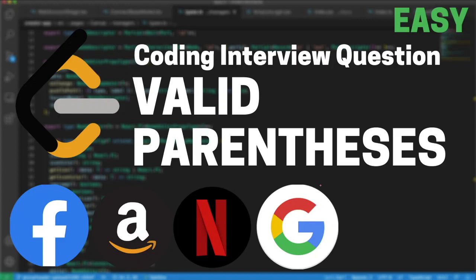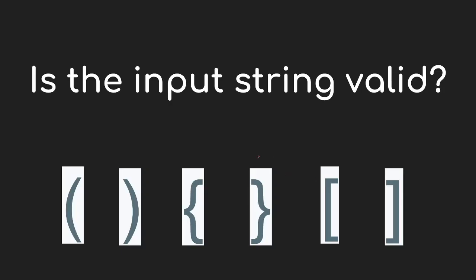Today we're going to be looking at a very common interview problem called Valid Parentheses, which can be found on LeetCode. The problem gives you a string composed of six characters from three pairs of different parentheses, and asks if the given string is valid. A valid string is one in which every open bracket is closed with the corresponding closed bracket, and the brackets are closed in the correct order.